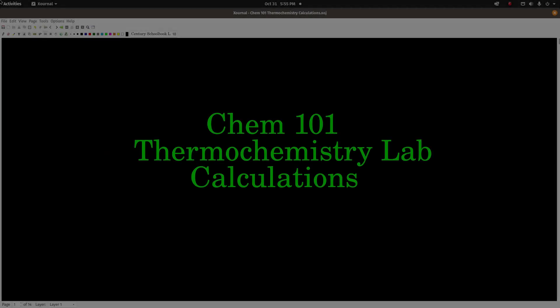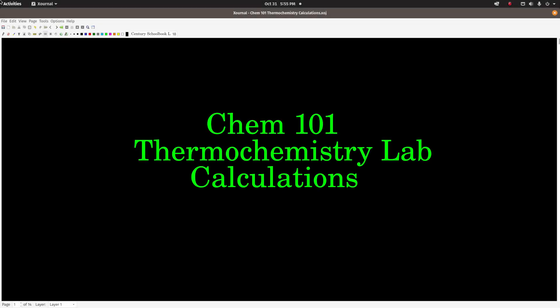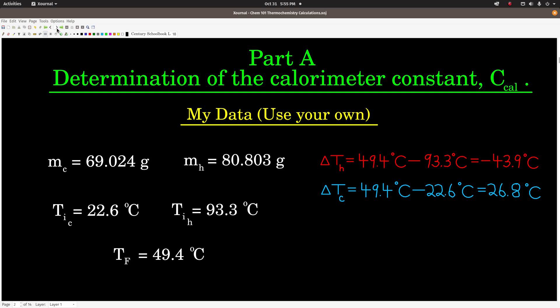Hey guys, this video is a brief explanation of the thermochemistry lab calculations for Chem 101. We start with Part A, where you determine the calorimeter constant for your calorimeter. I put some data that I made up up here — make sure you guys use your own data, which is in the student lab data file on Canvas, or if you're doing this in the lab then you've got your own data.